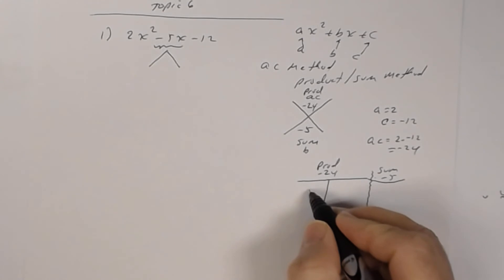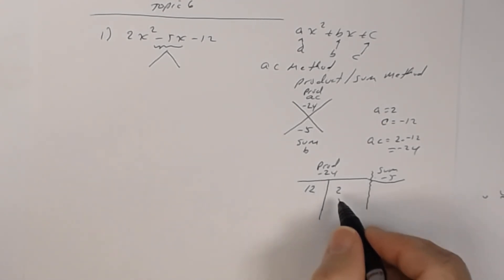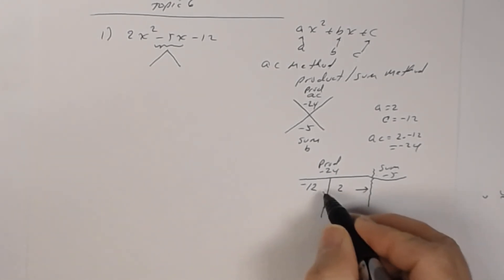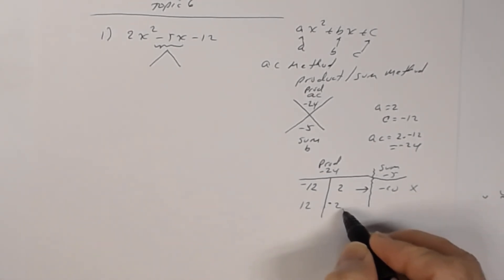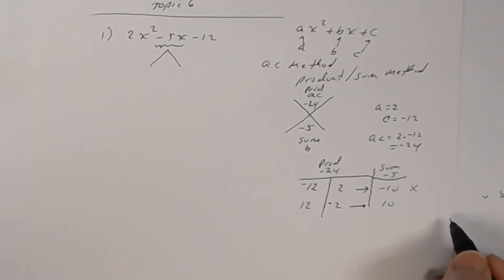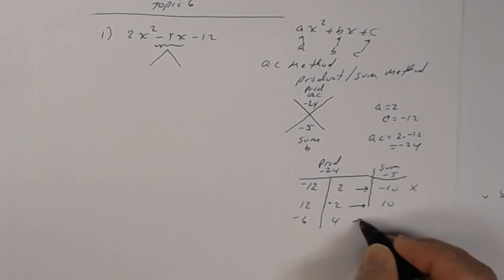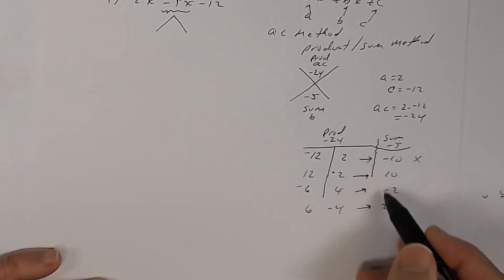We know 12 times 2 is 24, but making one negative gives a sum of negative 10 or positive 10 — neither works. Trying 6 and 4: making one negative gives a sum of negative 2 or positive 2, so that doesn't help either. What about 8 and 3? One has to be negative. Negative 8 plus positive 3 is negative 5 — that's the one. It doesn't matter whether you write negative 8 first or 3 first.